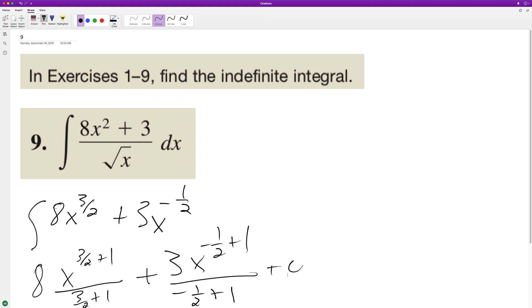Plus c. So we end up with eight x raised to the five halves over five halves, so this becomes 16 over 5, and then plus three x raised to the one half over one half, so this becomes six, and then we have plus c.